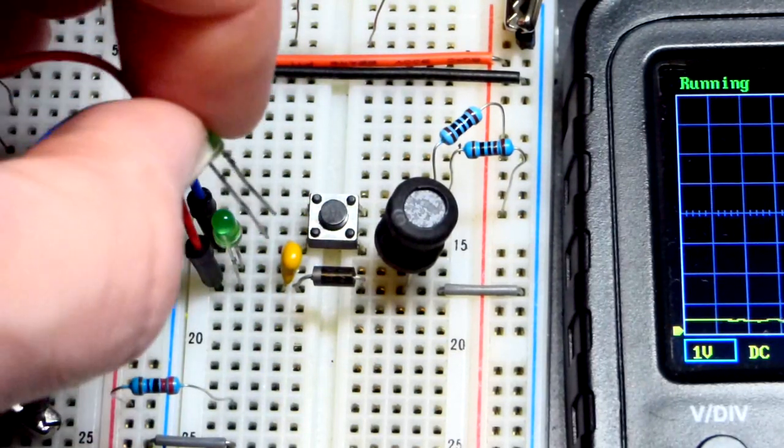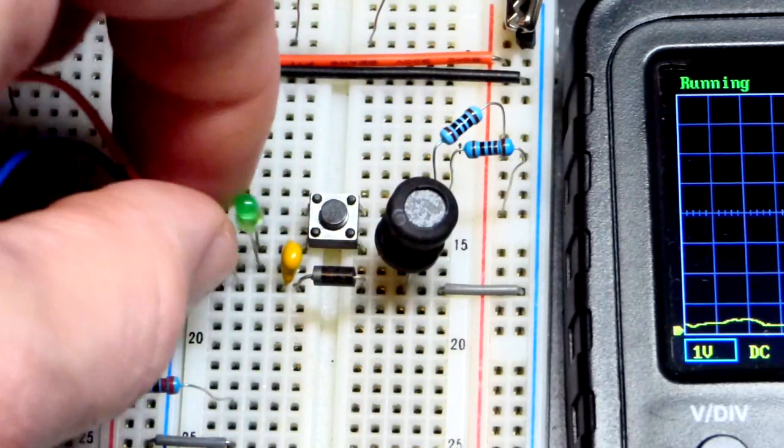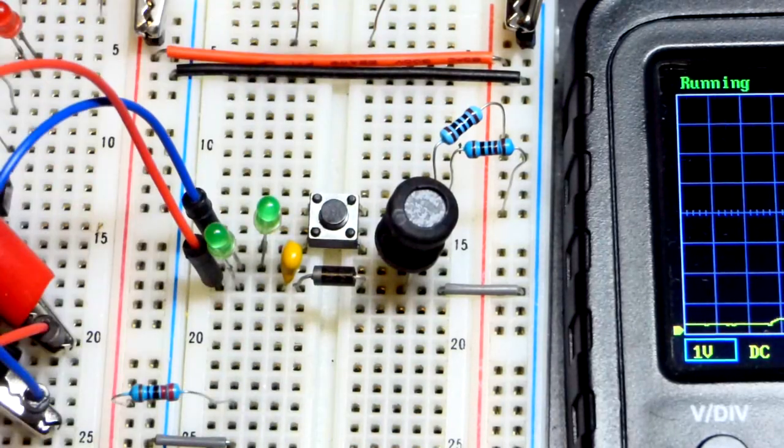Again, the long lead, the anode. This side is going to be more positive, up higher is going to be more negative so we'll put it in that way right there. Short lead, the cathode up.